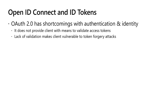In addition to OAuth 2.0, we need to bring in OpenID Connect. OAuth has some shortcomings related to authentication and identity. One thing OAuth forgot to do is provide a way for the client application to validate an access token. It allows the secured API to validate the access token, but the client application was never given the ability to check that it wasn't a fraudulent token. This lack of validation made OAuth 2.0 vulnerable to things like token forgery attacks before OpenID Connect existed.